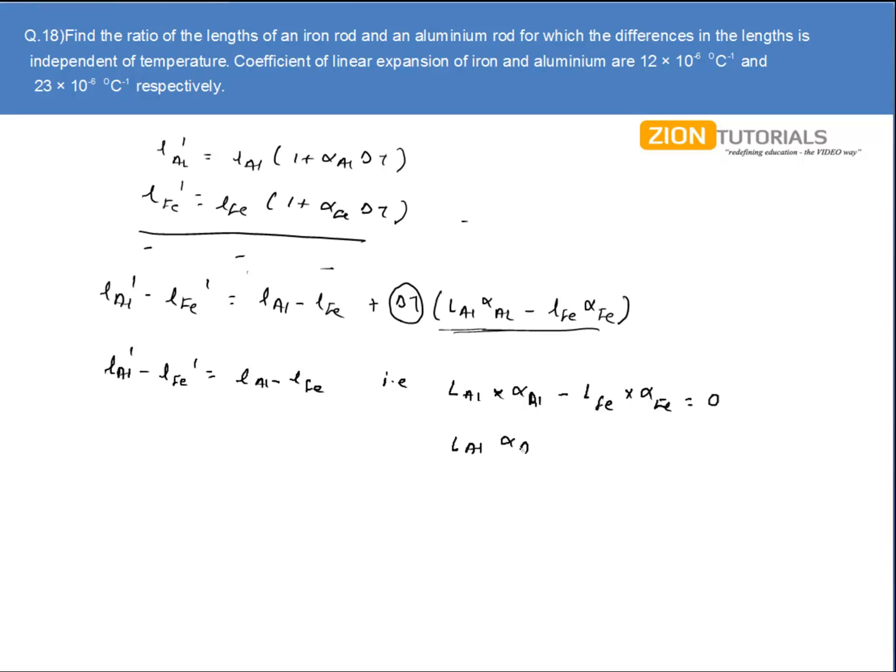Length of aluminum times α_Al is equal to length of iron times α_Fe.